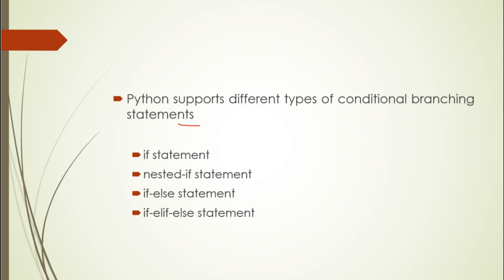Python supports different types of conditional branching statements. First is the if statement, next is nested if, third is if-else, and fourth is if-elif-else — if-else is just the same as if-else-if-else. We will discuss these in the next videos.